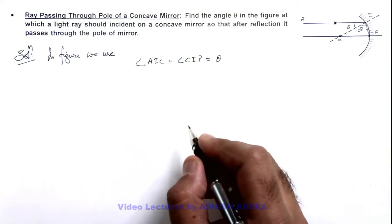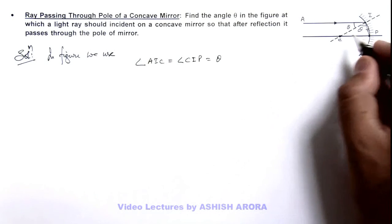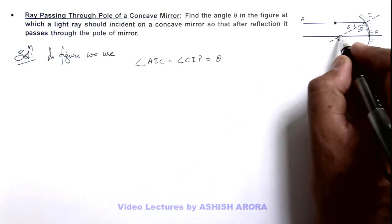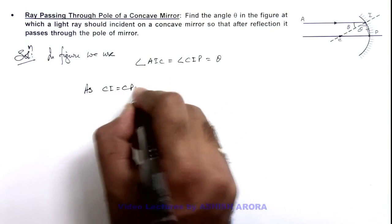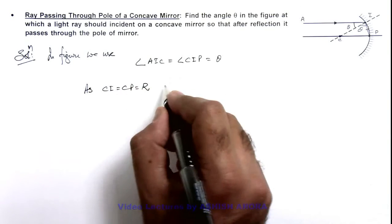In this situation, we can see the value of CI is equal to CP because C is the center of curvature. We can write as CI is equal to CP, which is the radius of curvature.